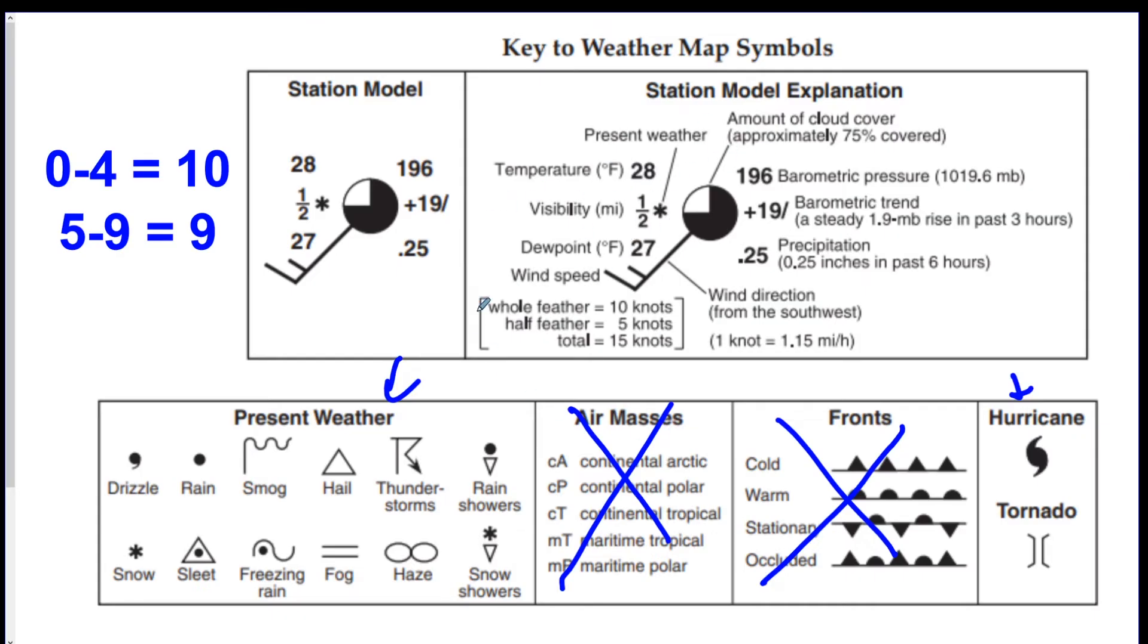So I'm just going to quickly run through each thing. In the top left, you got your temperature. It's in degrees Fahrenheit. We've never put units on a station model. The idea is to save space. So they didn't add units. Visibility is how far ahead of you you can see. So that's in miles. Half a mile. This symbol right here is the present weather.